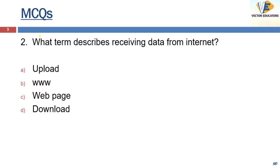Second question: what term describes receiving data from the internet? The answer is download. On the contrary, upload means sending data or a file from your device to somewhere on the internet.